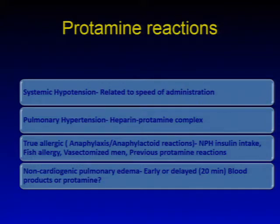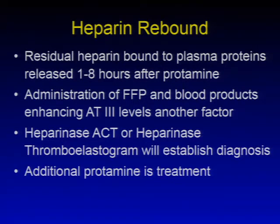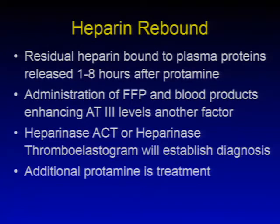Heparin rebound is a significant problem in patients re-explored for bleeding. Residual heparin bound to plasma proteins is released 1–8 hours after protamine administration. Administration of fresh frozen plasma or blood products enhancing AT3 levels is another contributing factor. Heparinase ACT or heparinase thromboelastogram establishes the diagnosis: a plain ACT will be elevated, but with heparinase neutralizing the heparin, the ACT and TEG normalize — confirming heparin rebound. Additional protamine is the treatment.